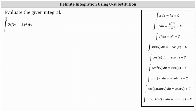We want to evaluate the given definite integral. This is going to require u-substitution because we have the quantity 3x minus 4 raised to the third power, not just x raised to the third power, which means we begin by letting u equal 3x minus 4.